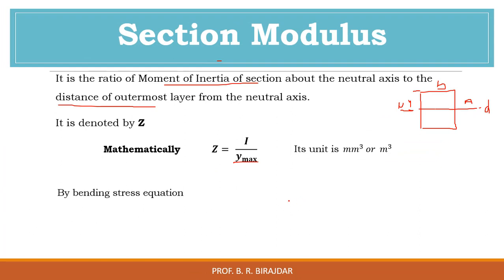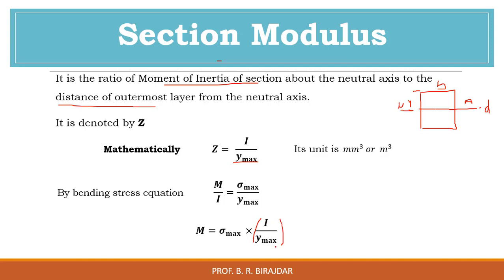Using the bending stress equation, which we already know: M/I = σ/y. Rearranging, σ_max = M × y/I, and therefore M = σ_max × (I/y). As per the definition, I/y_max is the section modulus Z. So we replace I/y_max with Z, giving us M = σ_max × Z.